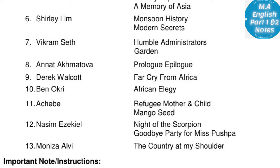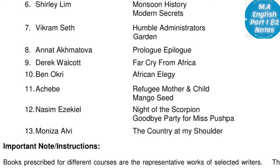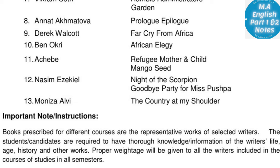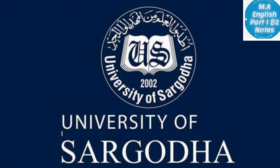Important note: books prescribed for different courses are representative works of selected writers. Students are required to have thorough knowledge of the writer's life, age, history, and other works. Proper weightage will be given to all writers included in the course of studies. I hope you have understood the basic information about the syllabus of University of Sargoda for MA English Part One and Two.